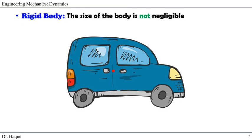Now let's talk about why the size of the body cannot be neglected. In particle motion it's a point, so we can neglect the size. But in a rigid body we have the weight downward, the reaction force upward, and the friction force at both tires if the car is moving, as well as the force due to acceleration in the x direction. Thus when taking moments about the mass center or any point, we cannot neglect the size of the car, because without those distances we cannot take moments.